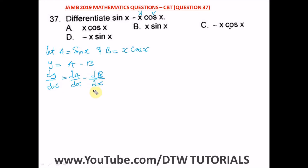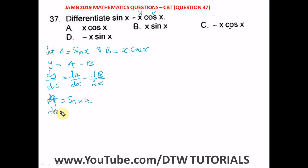So we are going to find da/dx and db/dx. For da/dx: a is equal to sin x, so da/dx is equal to the differentiation of sin x, which gives us positive cos x.